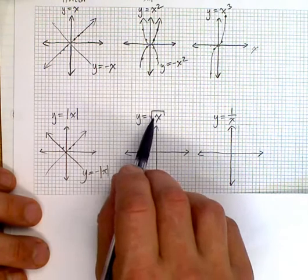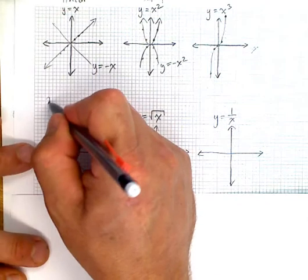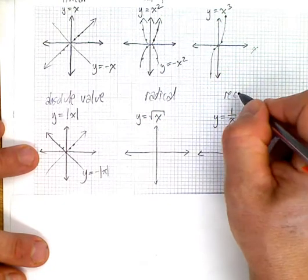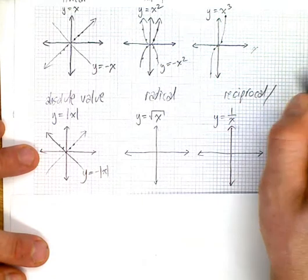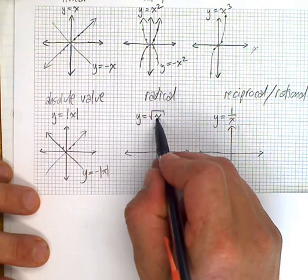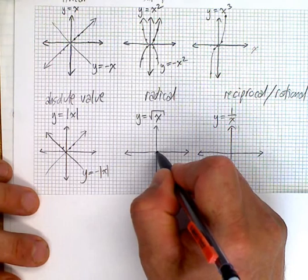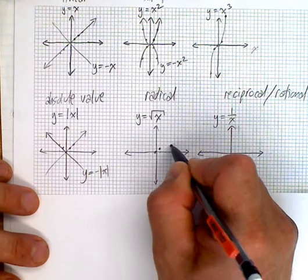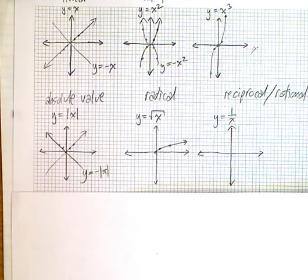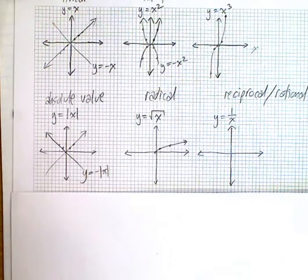This is called a radical function. Square root of x. We hopefully understand that you can't have negative numbers, so it's not going to exist over here. Can you take the square root of 0? Absolutely, it's 0. The square root of 1 is 1. Square root of 4 is 2. Square root of 9 is 3. Take values of x that you know the square root of.